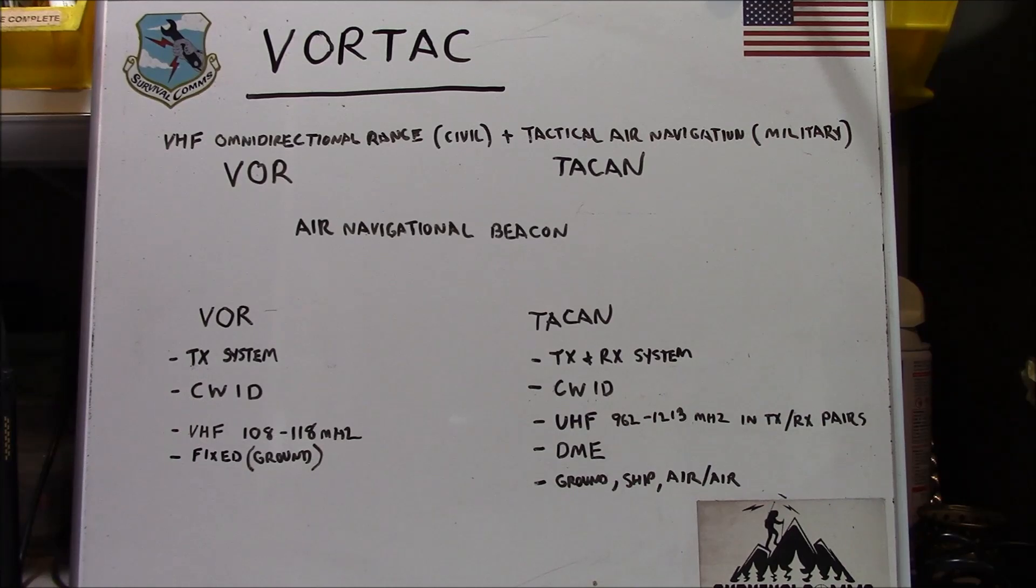Our first example is the VOR, which is a transmit only system, meaning it does not have a receiver built into the system. It identifies by Morse code periodically, and it operates in a VHF 108 to 118 megahertz range. And it's a fixed asset.